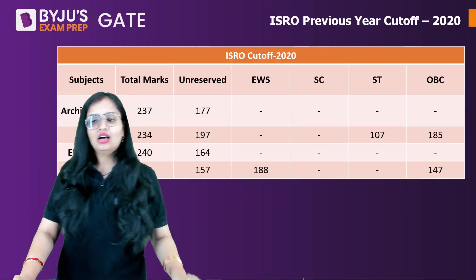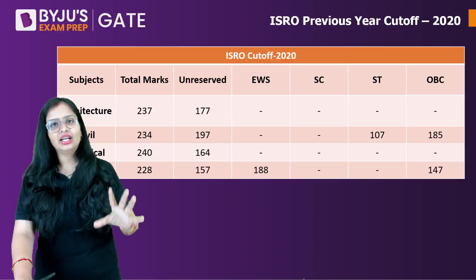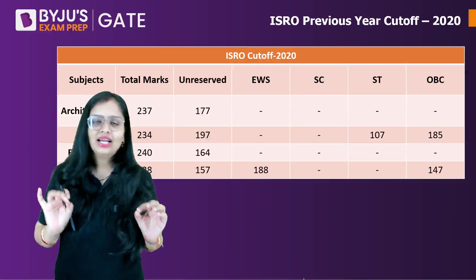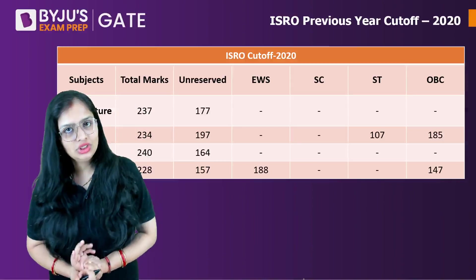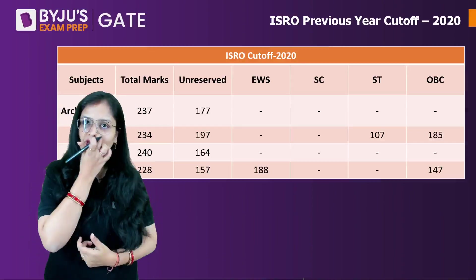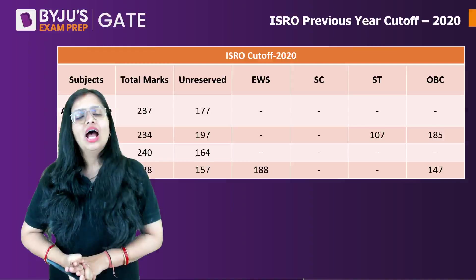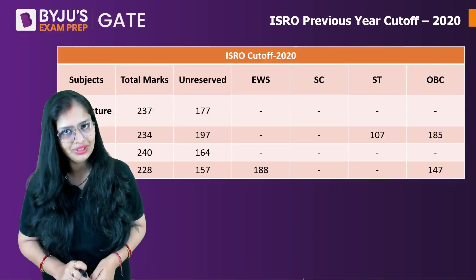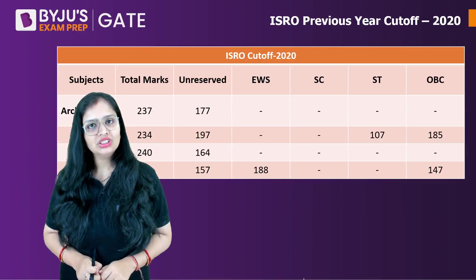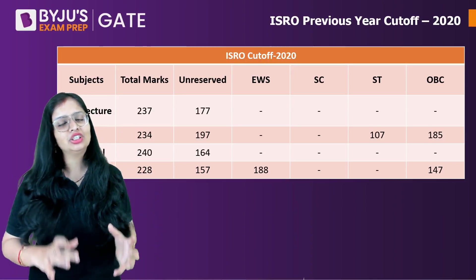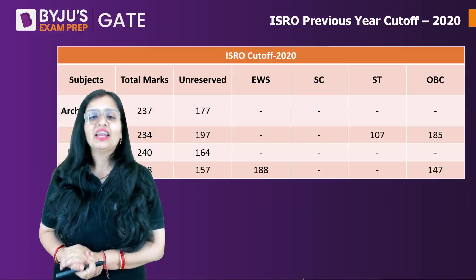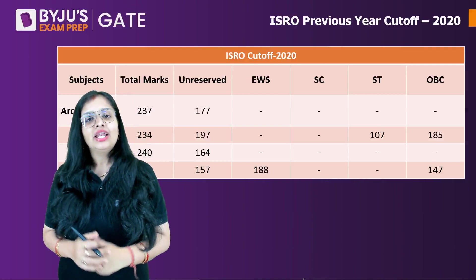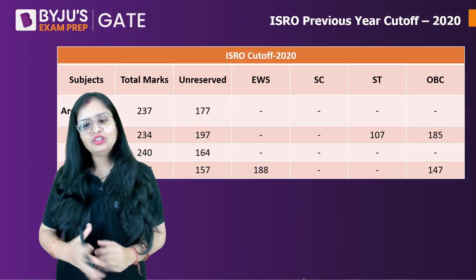Before discussing the cutoffs, let me clarify a few things. The paper consists of 80 questions and the time duration is 90 minutes — it's an offline mode where you fill up bubbles, so you get roughly one minute per question. Each question carries 3 marks, making the total 240 marks, with 1 mark deducted for negative marking.